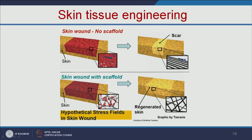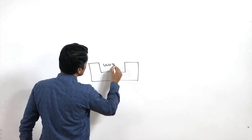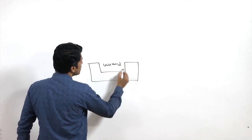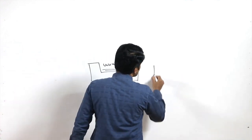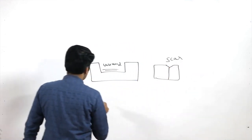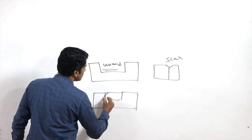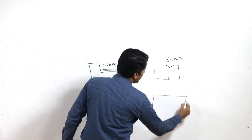For skin tissue engineering: if you have a wound on your skin and you lose some cells, when the skin contracts it forms a scar. But when you replace the damaged cells with a scaffold loaded with skin cells, it will regenerate the skin and there will be no scar formation. When skin contracts without the scaffold, a scar forms due to contraction, but with the scaffold there is no scar formation.